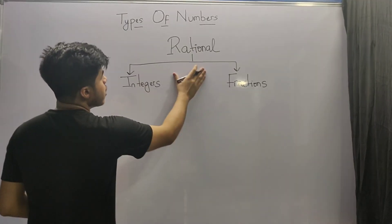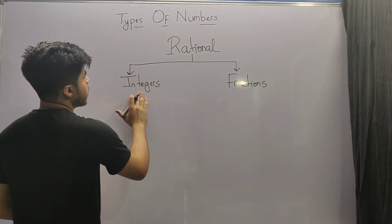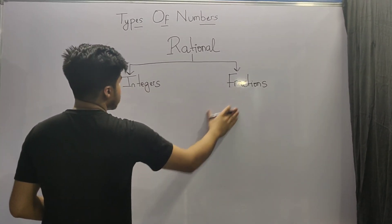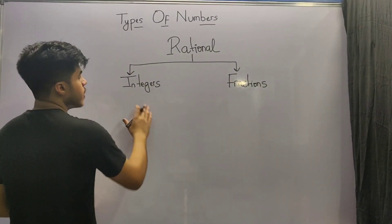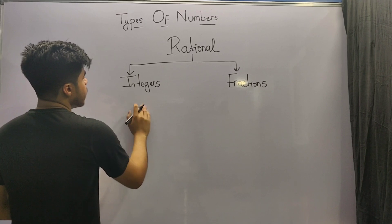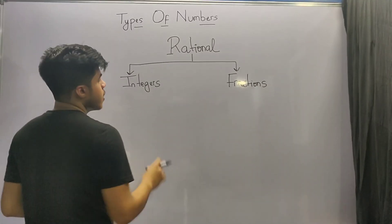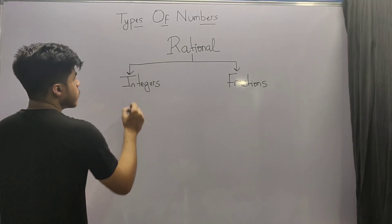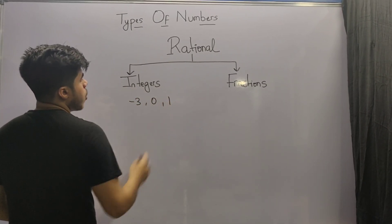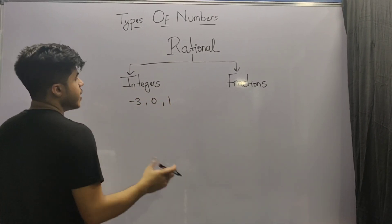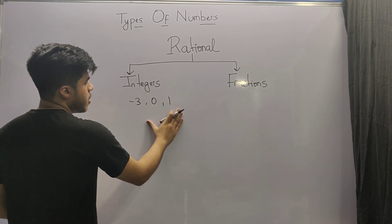Rational numbers can further be subdivided into two parts: integers and fractions. The rational numbers which do not have a decimal part or a fractional part are known as integers. So minus 3, 0, and 1 are all integers because they do not have any decimal or fractional part.